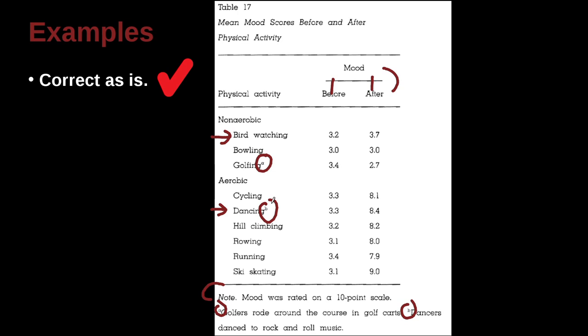And so we can see what does B mean? B means dancers dance to rock and roll music. What does A mean? Golfers rode around the course in golf carts. So we don't want to put that information inside the table, because it makes the table too big. So that's looking good. That looks like a good example.